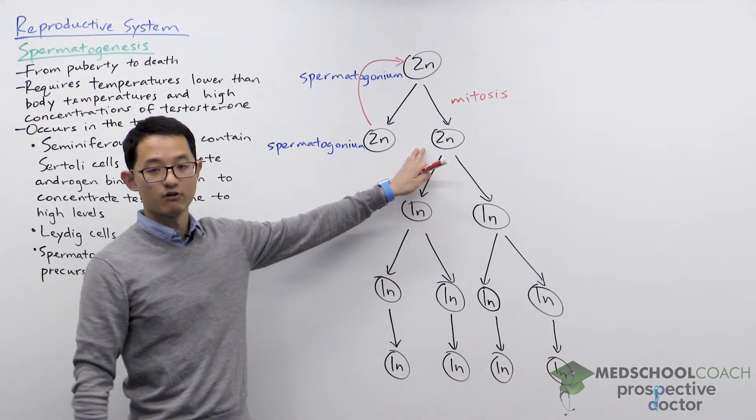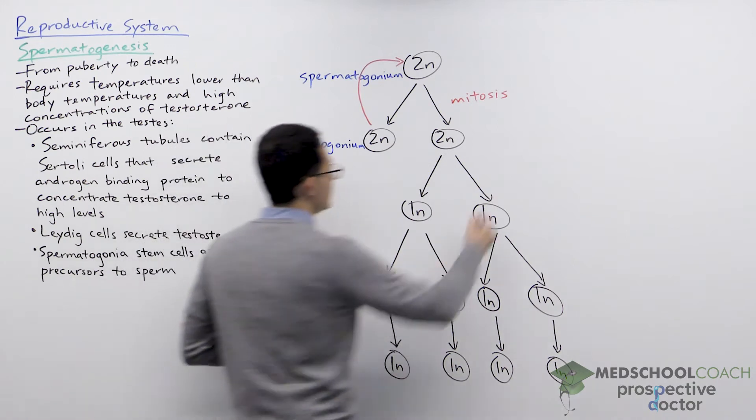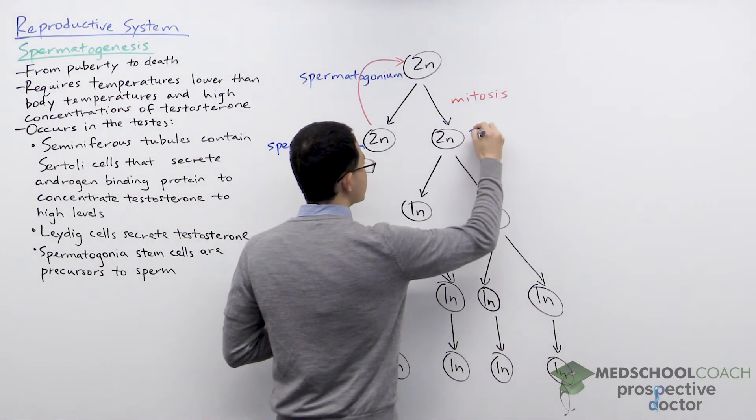This cell over here, the other cell formed from mitosis, is going to be the primary spermatocyte.